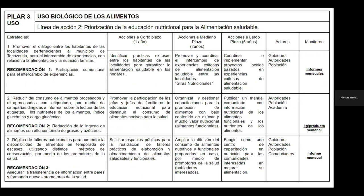El segundo pilar, el uso, abarca la comensalidad. Cuando transmitimos conocimientos, cuando elaboramos un guiso, cuando vamos de cacería o salimos a recolectar alimentos, el diálogo que se da entre los habitantes de un hogar y de una comunidad a otra es primordial para poder atender este problema de malnutrición. La comensalidad es uno de los ejes principales de la educación nutricional, y es una de las primeras estrategias con la que hemos tenido más éxito.